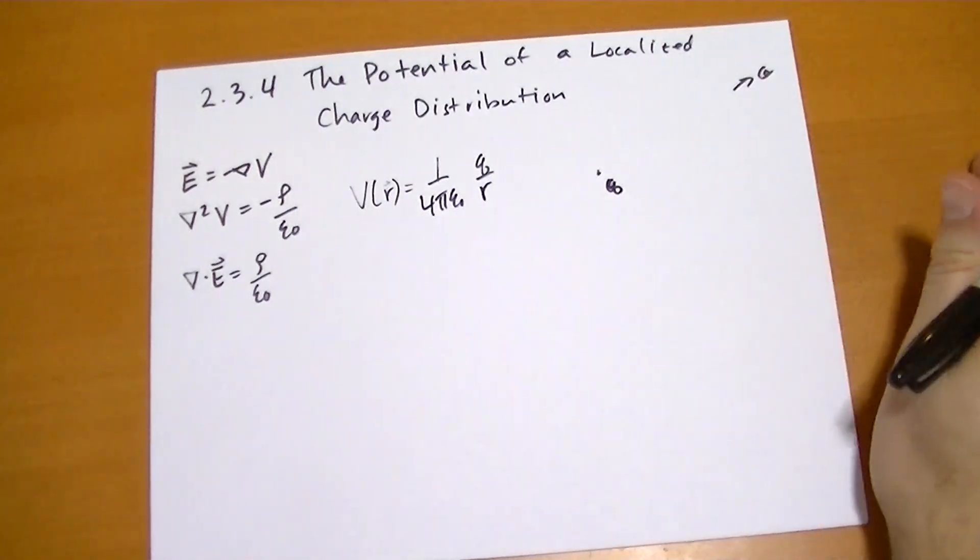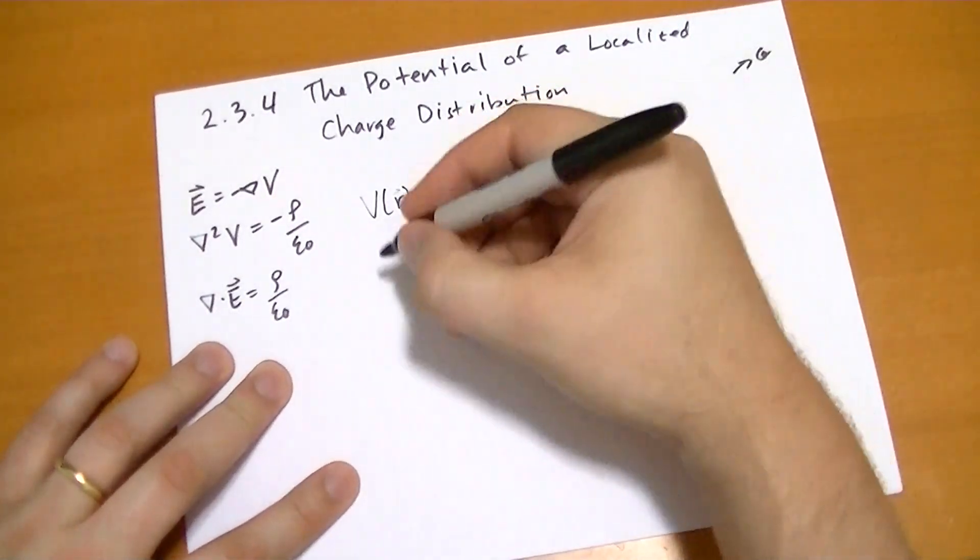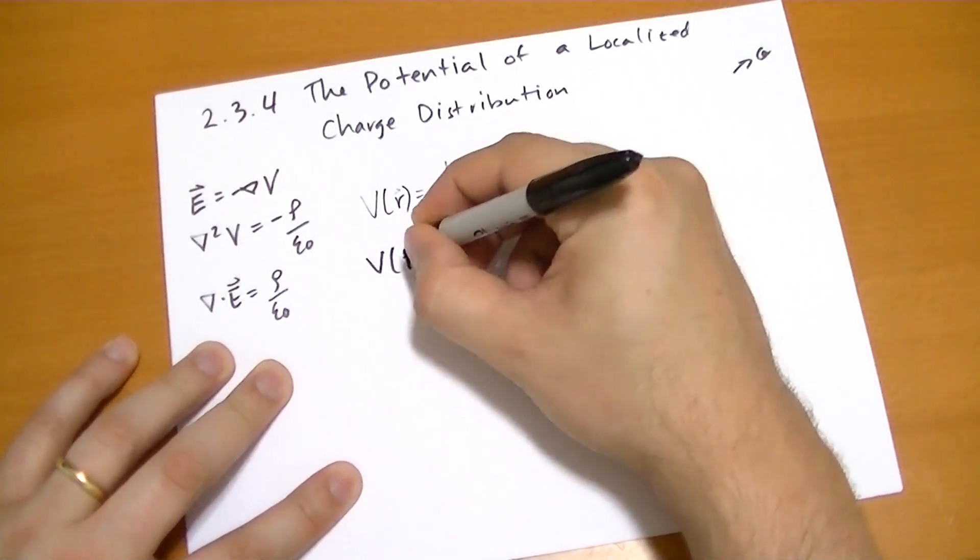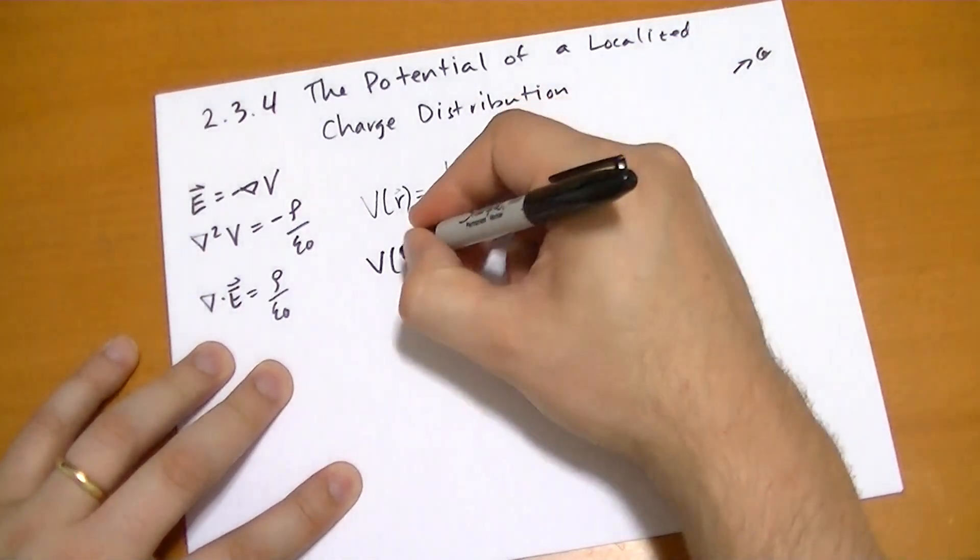The length of that vector to the position. And so using the principle of superposition for several point charges, the potential at some point, I'm going to try to use the same notation here, let's use P.